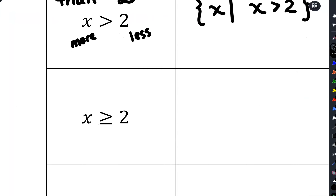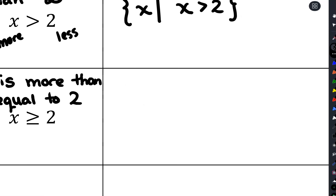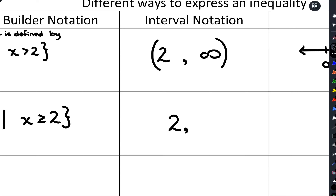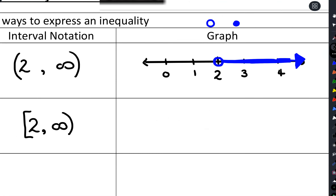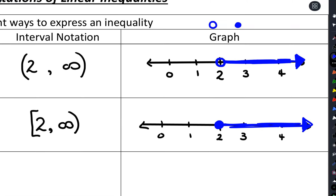This next one has a line underneath the inequality symbol, meaning x is more than or equal to two. In set builder notation we write x is defined by x is more than or equal to two. For interval notation we still go from two to positive infinity, always using parentheses with infinity, but now we include two so we use a square bracket there. On the graph the only change is we use a solid circle at two instead of an open one, and shade everything to the right.